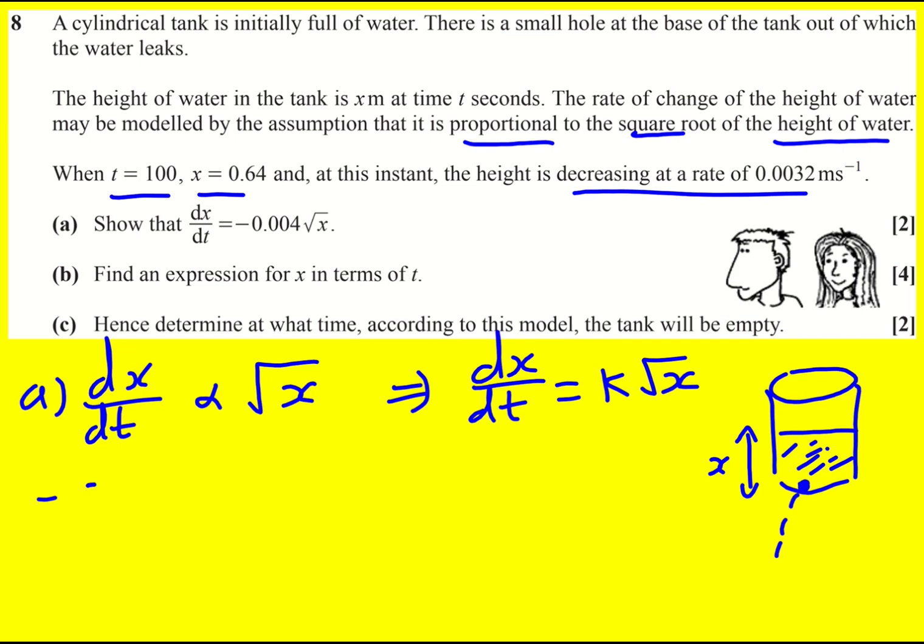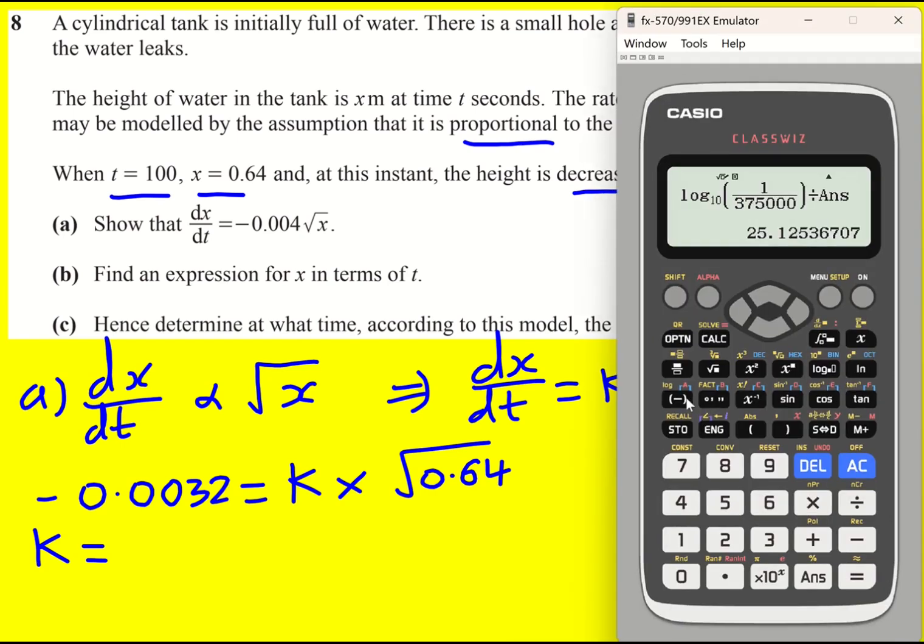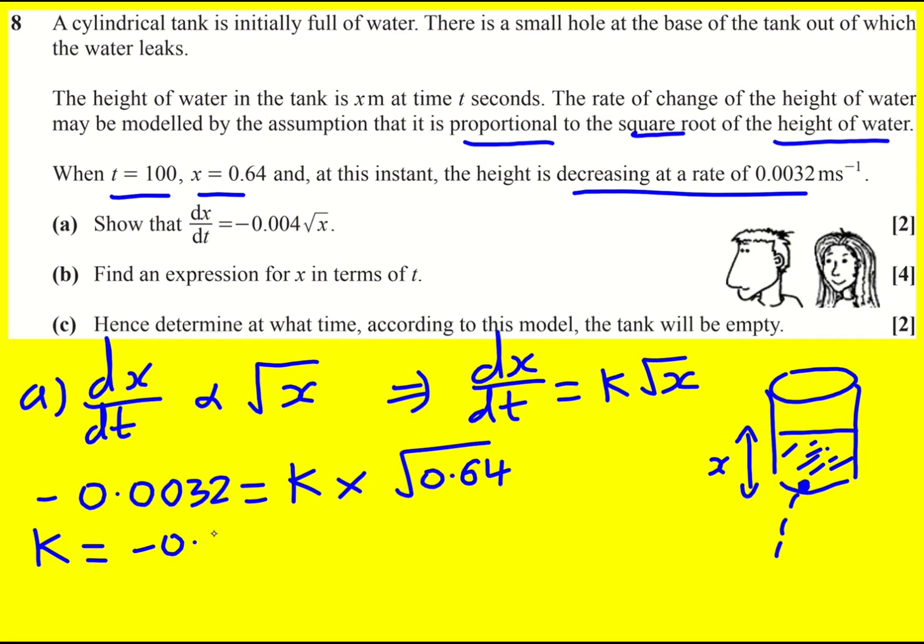So we can say that minus, it's very important we put that in, minus 0.0032 is going to equal k times the square root of 0.64. So you can bet k is going to be minus 0.004, but let's just check. That's actually going to be 0.8 when you find the square root, and so you have to show sufficient working for it, that is enough.